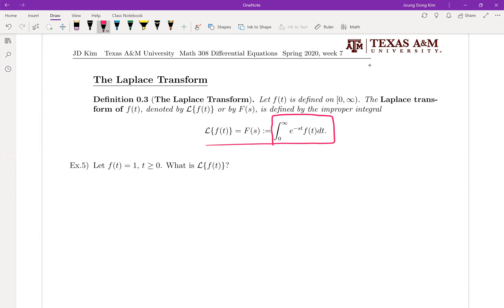This is the reason why we talked about improper integral before. So your definition is integral 0 to infinity e to the minus st times given function f of t dt. Let me give you a couple of examples.